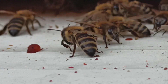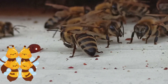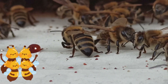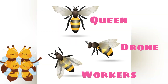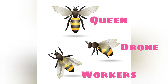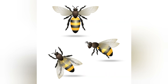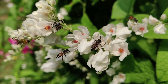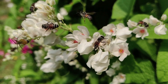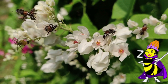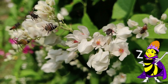Social structure: Honeybee colonies are highly organized and consist of three main castes — the queen, worker bees, and drones. The queen is the sole reproductive female, while worker bees are females responsible for various tasks within the hive. Drones are male bees with the primary purpose of mating with queens.